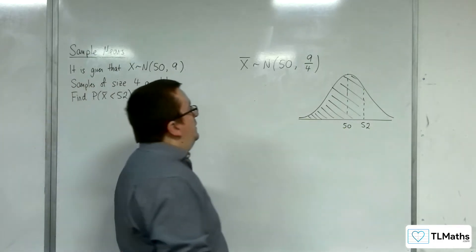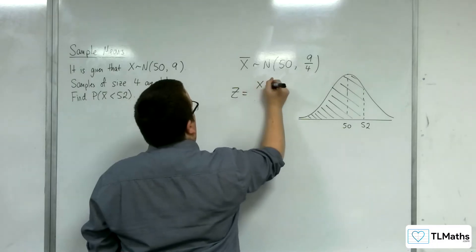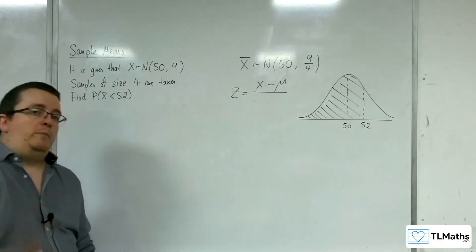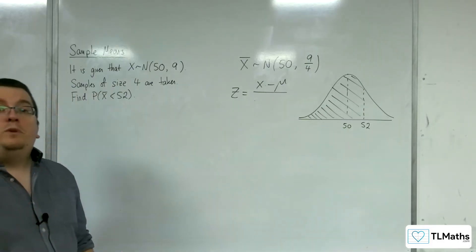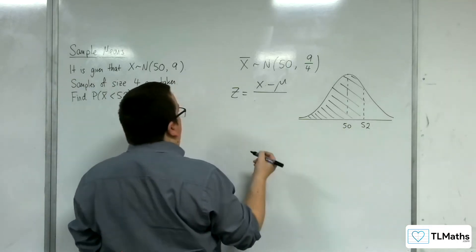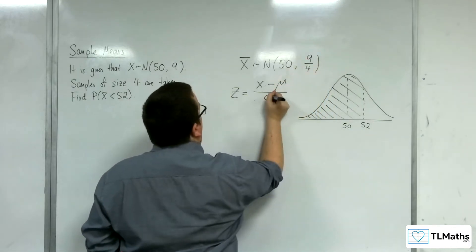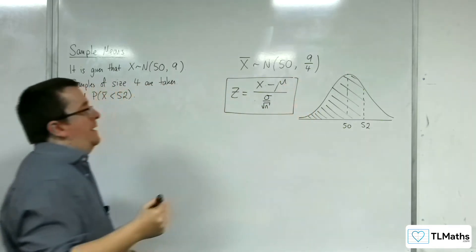So, we're going to need our formula, z equals x minus mu over sigma, but remember, now we're using sample means, we aren't using sigma, we're not using the standard deviation, we're using something called the standard error, which is the square root of this here, so that is sigma over root n, so we are going to utilize this formula here.